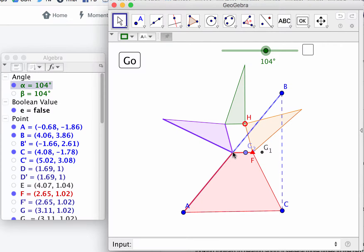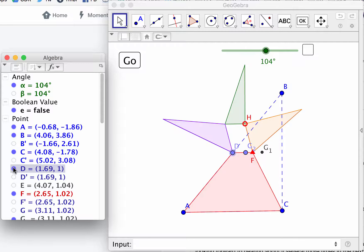So I played around and originally I made this point, which is D, to be just free on the one side of the triangle.